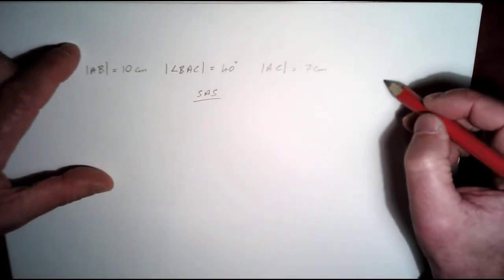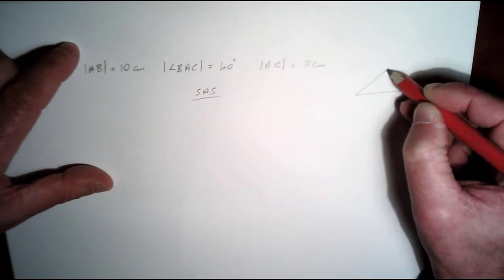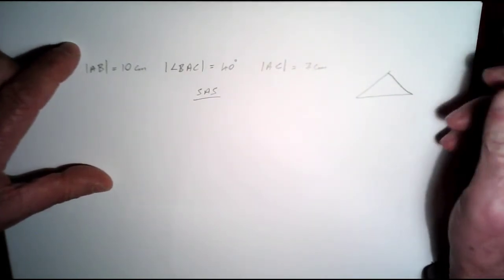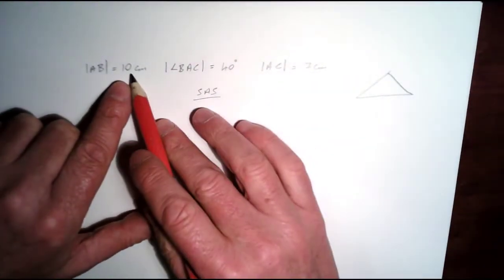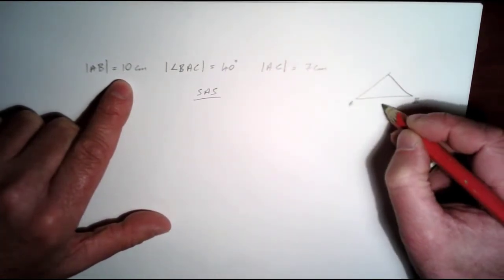So what we're going to do is again just draw a rough sketch of the triangle. This is going to be, let's see, I'm going to do the base here as AB and that's going to be 10 centimeters.